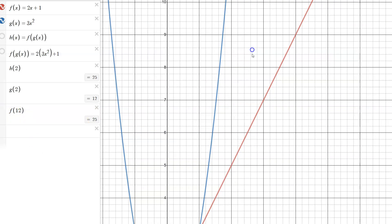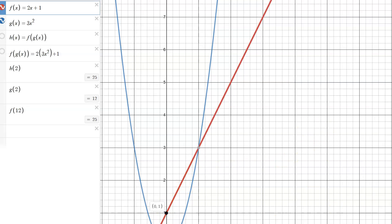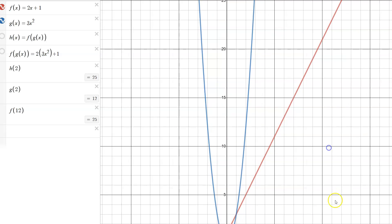F of 12 is 25. F is the red curve so we can come over here to input of 12, we have to zoom out a bit, and at x equals 12 we're at 25.